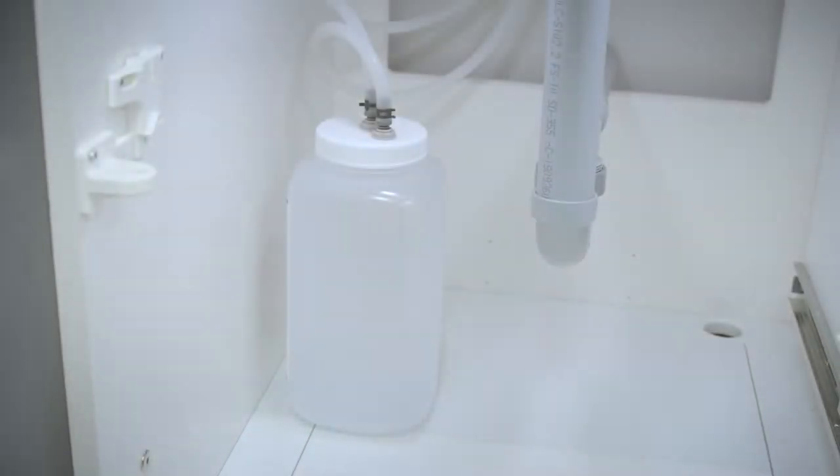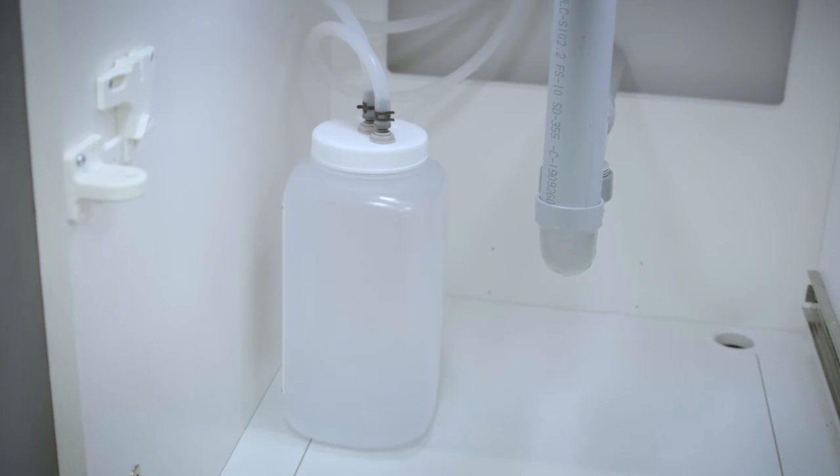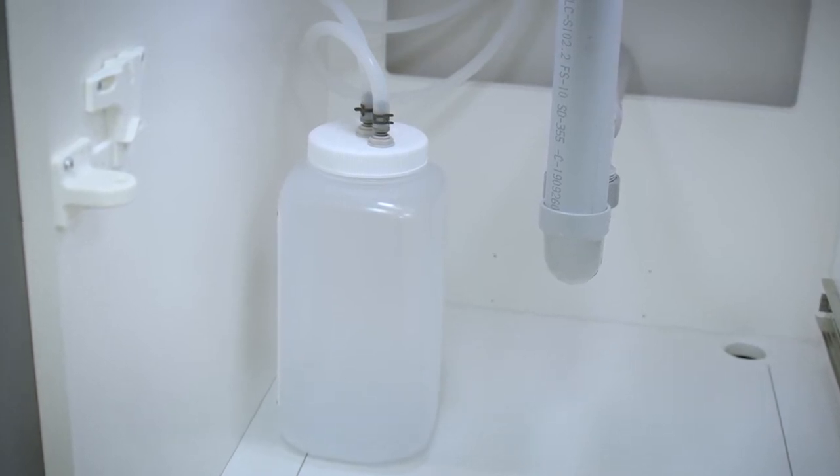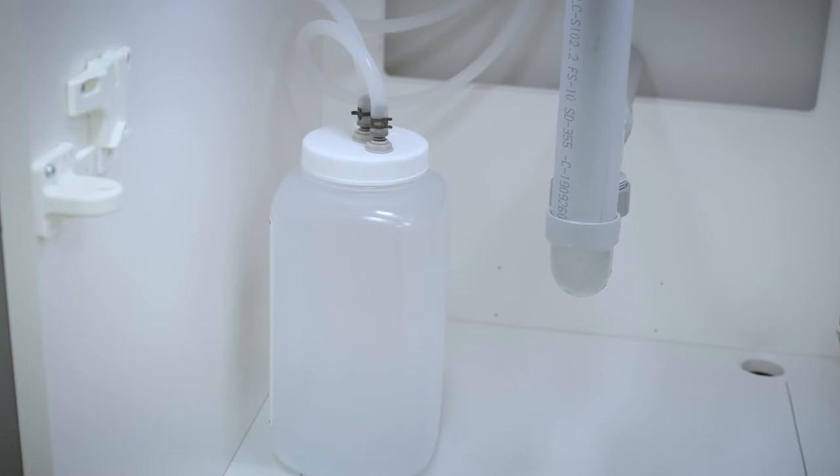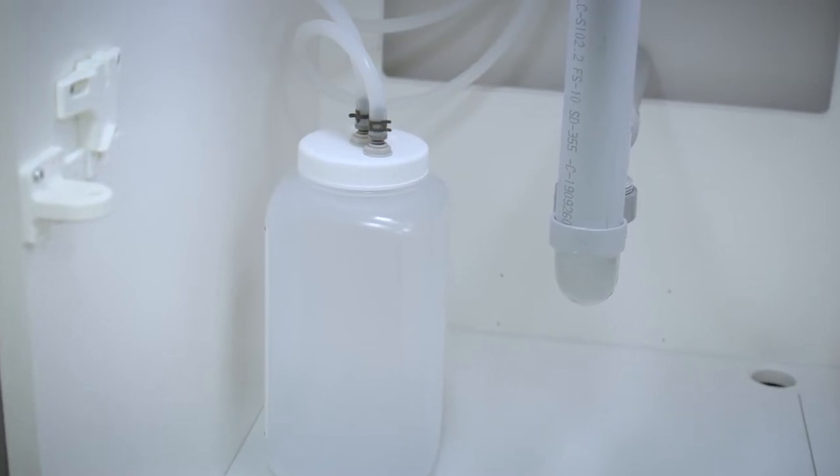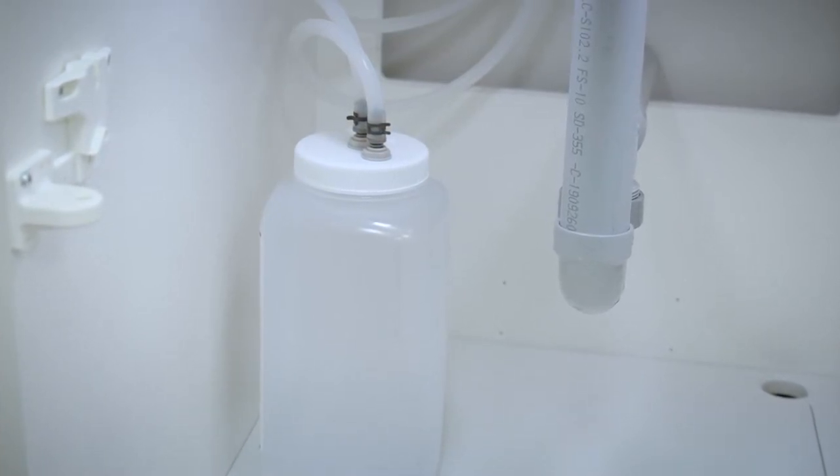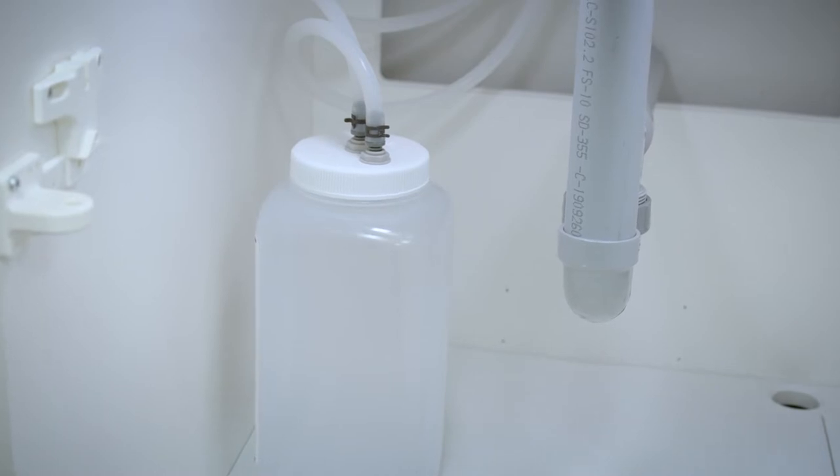The second drainage option is to use a waste bottle. Remember to carefully monitor the waste bottle to avoid overflow. The best practice is to empty the bottle every time you refill the water reservoir. When setting up the filling and drainage tubing, it is important to make sure the drainage tubes are not bent, crushed, or obstructed in any way.